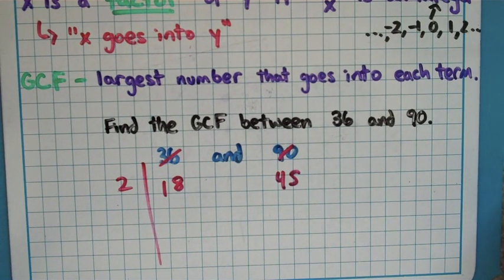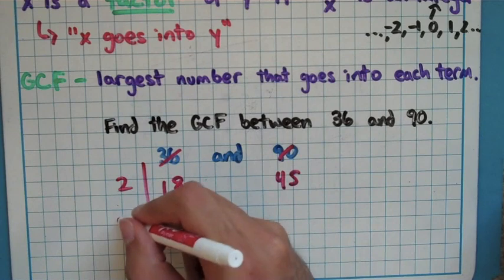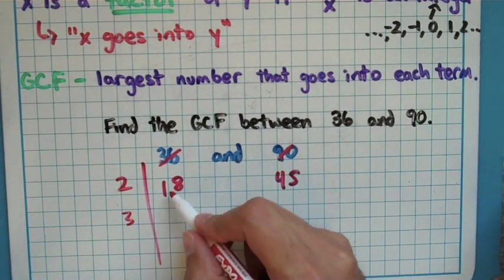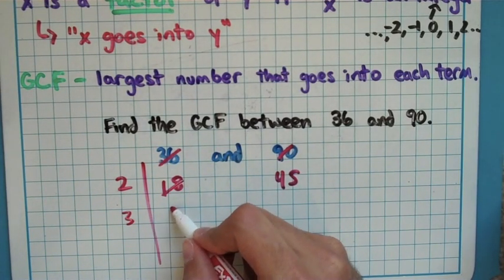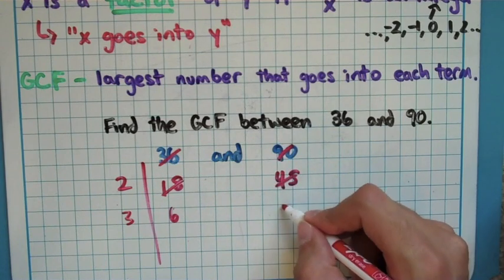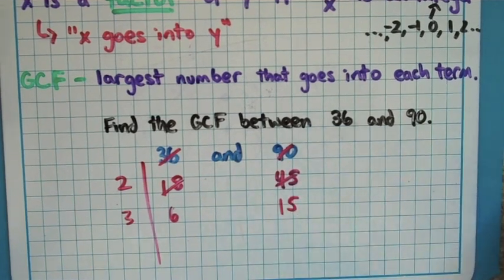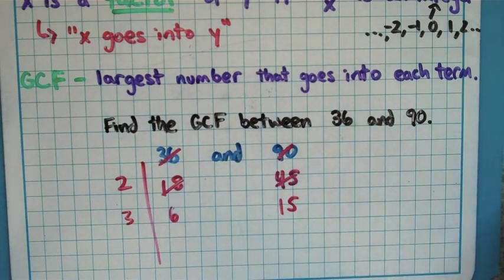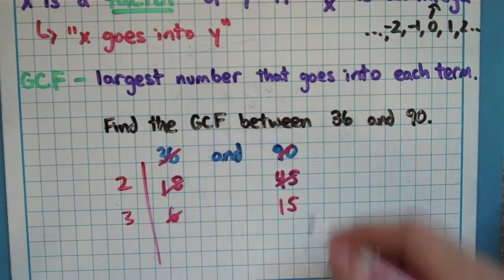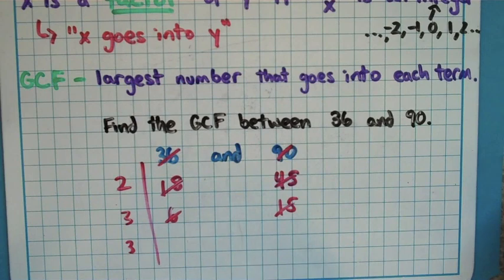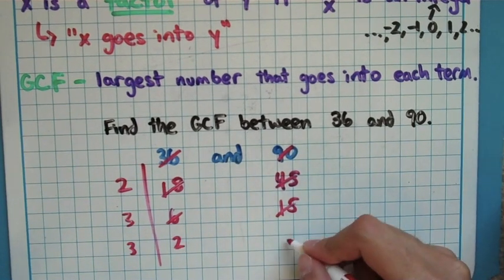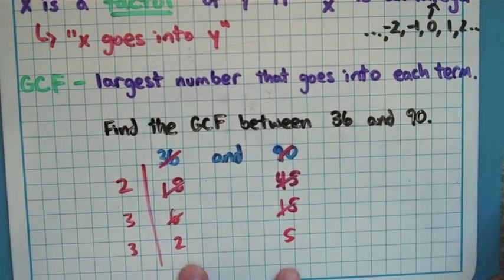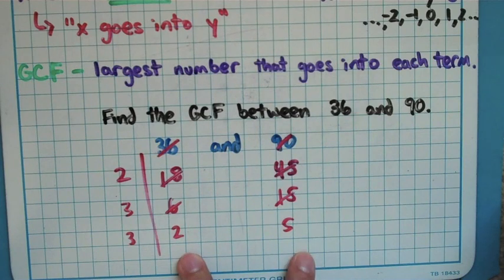So now I need to ask myself something that goes into 18 and 45. And 3 goes into 18, and it also goes into 45. So I'm going to divide both of these guys by 3. I get a 6 over here. I get a 15 over here. I have to ask myself something that goes into 6 and 15, see if there is something. And I just keep doing this until there's nothing else. So 3 actually goes into both of those numbers as well. I get a 2 and a 5. And there's nothing else but 1 that goes into 2 and 5, so I stop here.